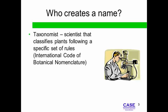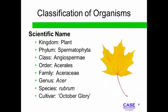Taxonomists use nomenclature — the scientific naming of plants — to create scientific plant names. As you learned in Lesson 5.1, Sorting Out Plants, organisms are identified by their scientific name. Here is a classification for a type of maple tree using the scientific names.